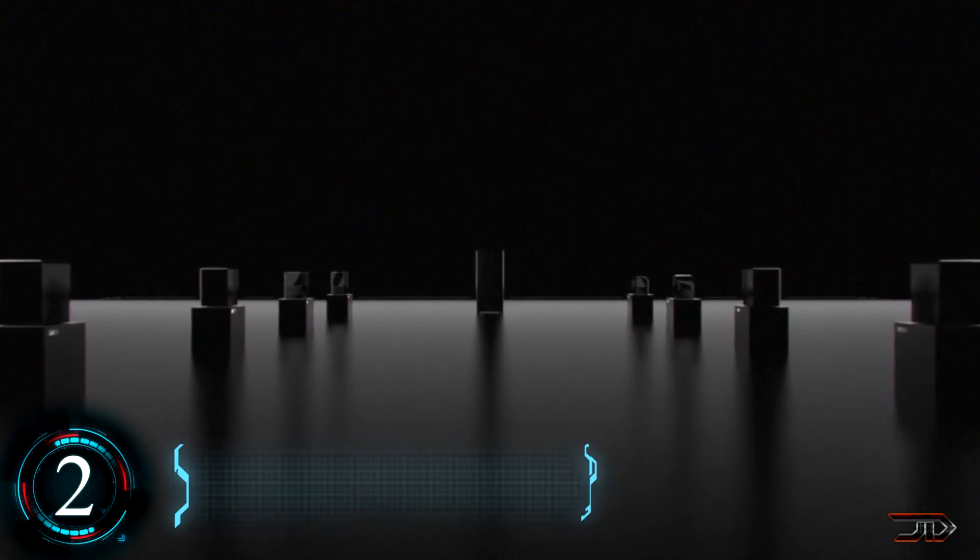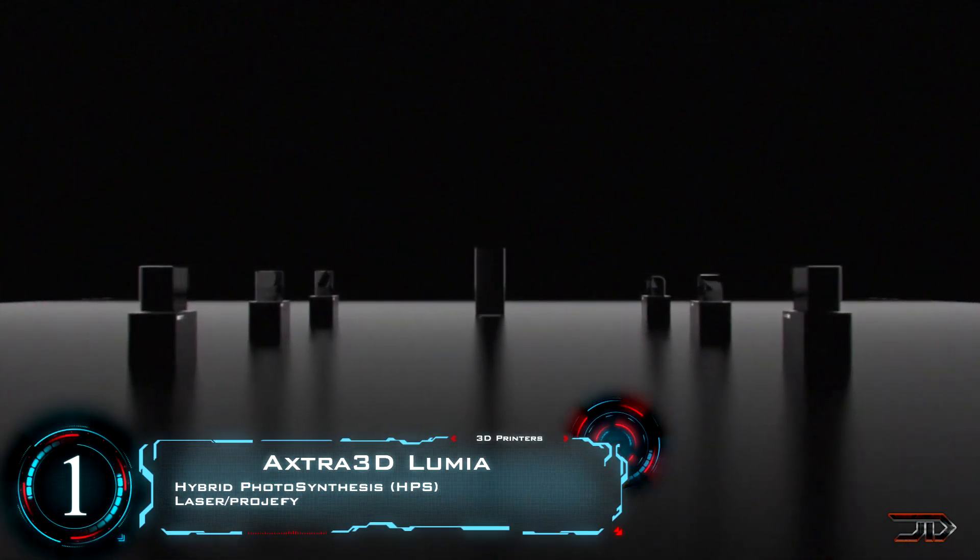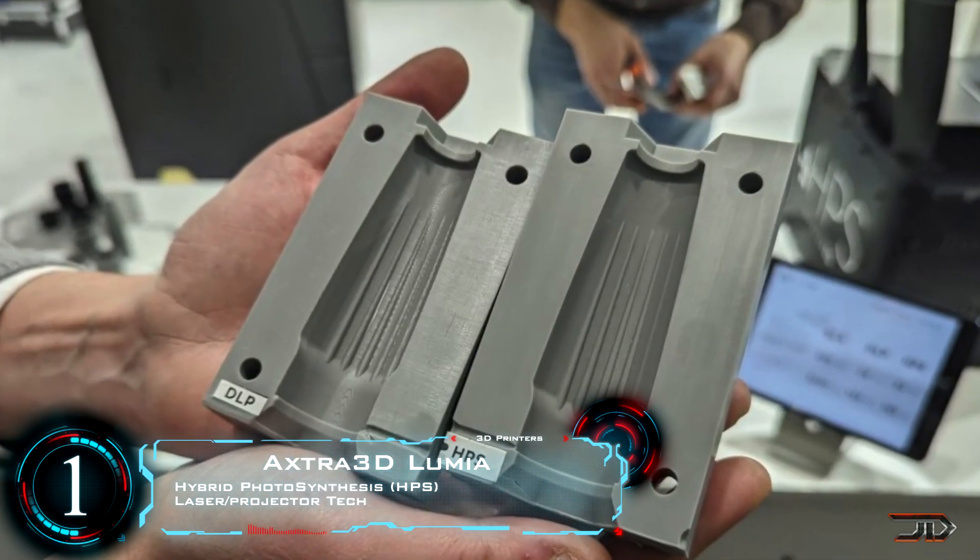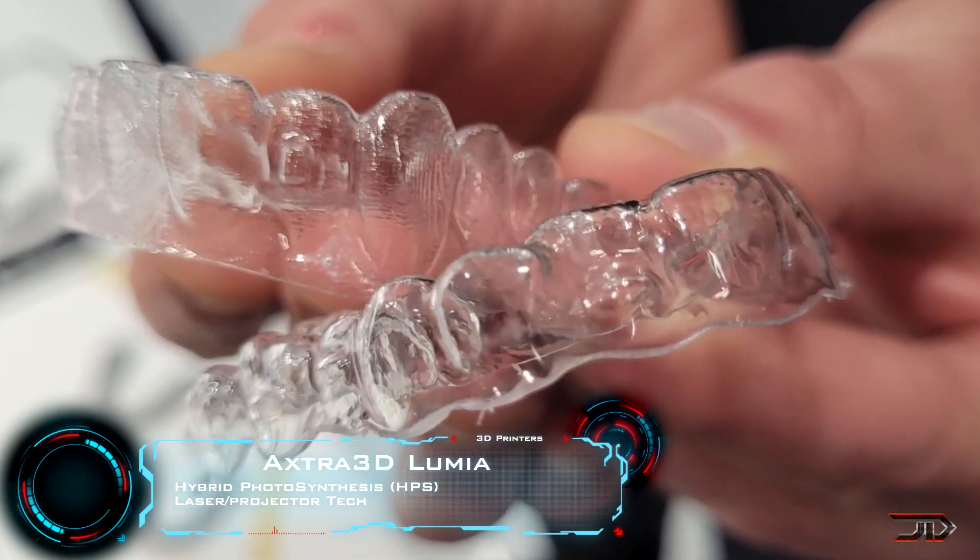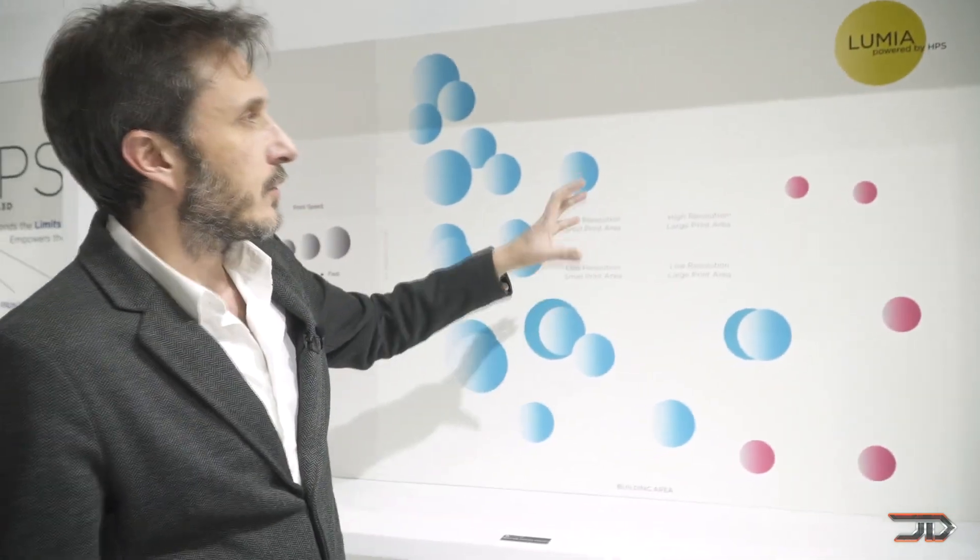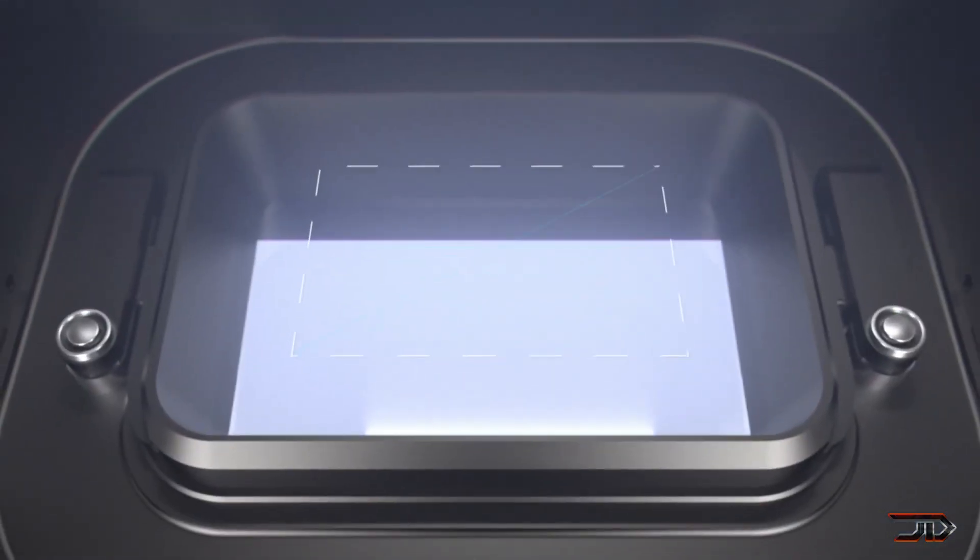Extra 3D has claimed to harness the benefits of SLA, DLP, and LCD all into one hybrid machine. This new method is called hybrid photosynthesis, which can use DLP and SLA to work at the same time on the same wavelength. In turn, this creates parts with impressive accuracy, reliability, and scalability.